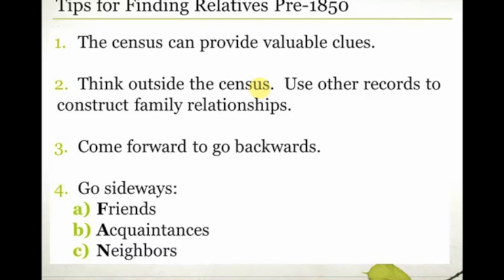Those are some basic tips for finding your relatives before 1850. In future weeks we can dig into more specifics — things change a little regionally. Hopefully this gets you thinking about what the census can do for you, thinking outside the census to records that help construct family relationships, coming forward to go back a generation, and working sideways to see who else in your ancestors' lives might be connected to them.